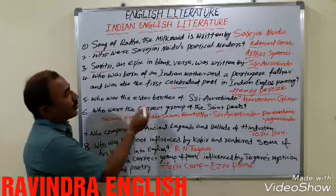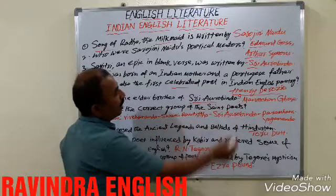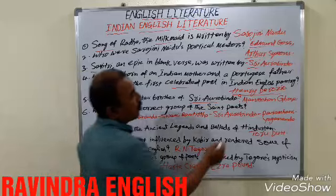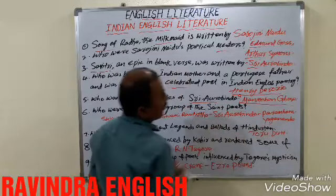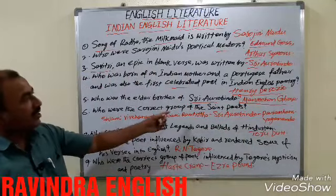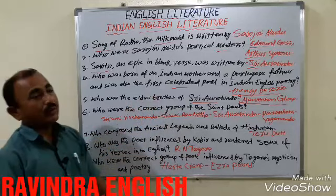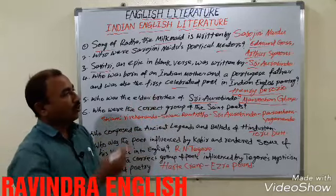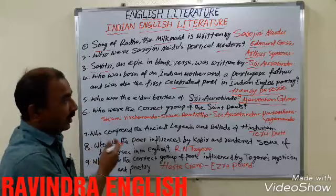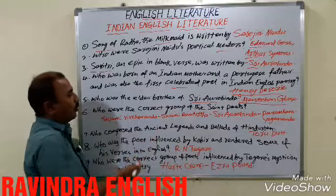Who was the elder brother of Sri Aurobindo? Manmohan Ghosh is also in the same department. So the elder brother of Aurobindo is Manmohan Ghosh.